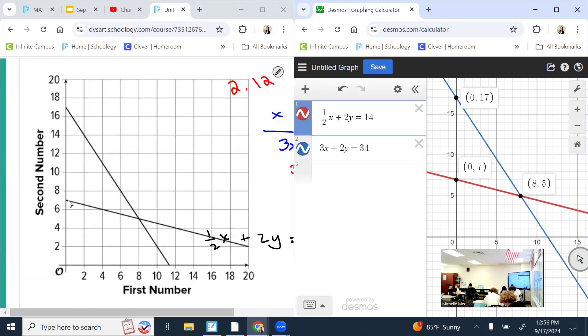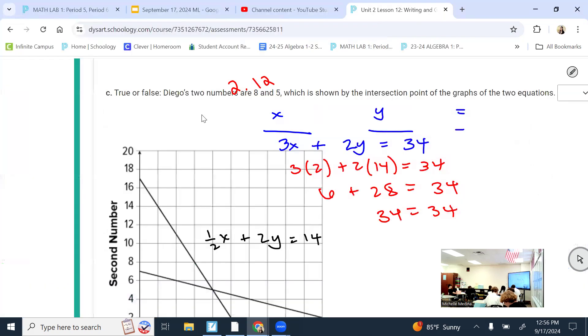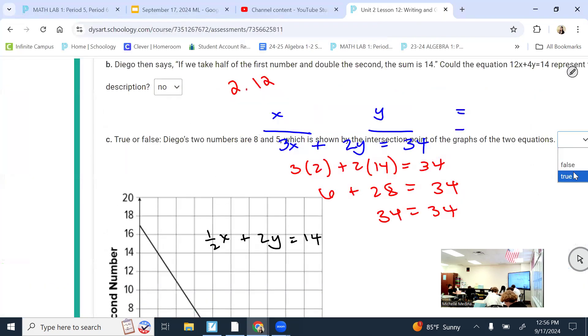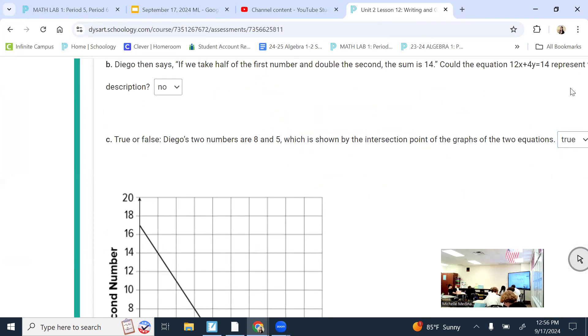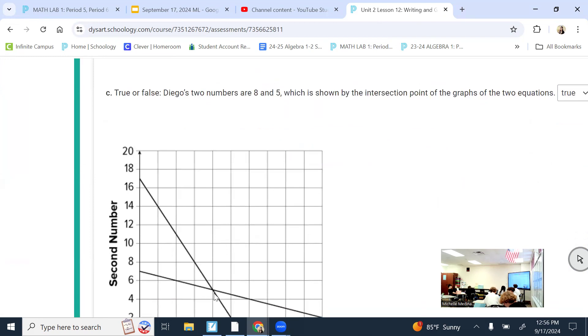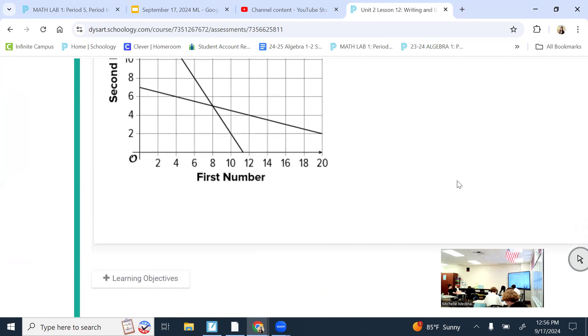This Y intercept is at 7. So looking at all those things, I could even look at the slope to be 100% sure, but it already looks good to me. So I would say yes, this graph shows it. And 8, 5 is where they intersect. So where it says the two numbers are 8 and 5, I would say that is true.